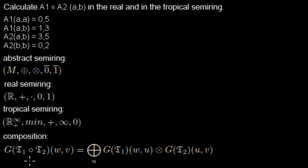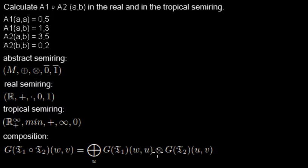Now let's have a look. We want to retrieve the weight of the composition of those transducers, where the input is W and the output is V. We input W into transducer 1 and get U out — U is not directly specified here. We then use U as input for the second transducer. We multiply both weights and sum over all possible U values.